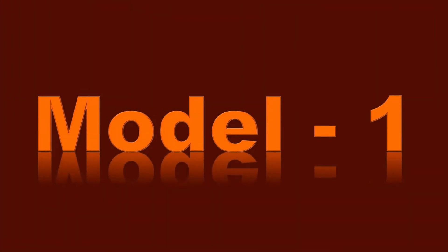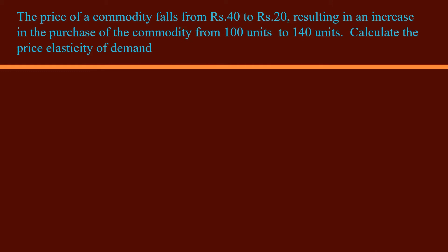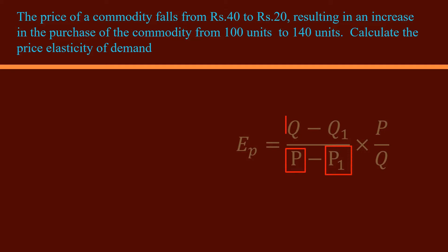The problem: The price of a commodity falls from 40 rupees to 20 rupees, resulting in an increase in the purchase of the commodity from 100 units to 140 units. Calculate the price elasticity of demand. Keep the formula in your mind and try to identify the values of the variables P, P1, Q, and Q1.